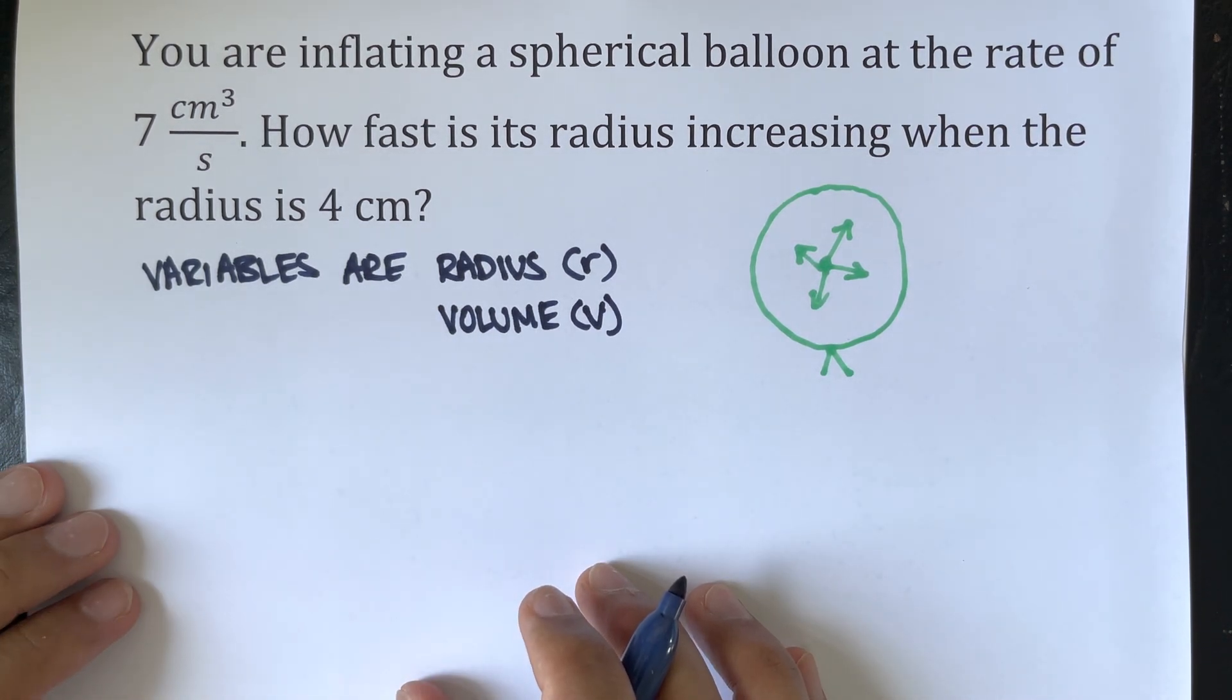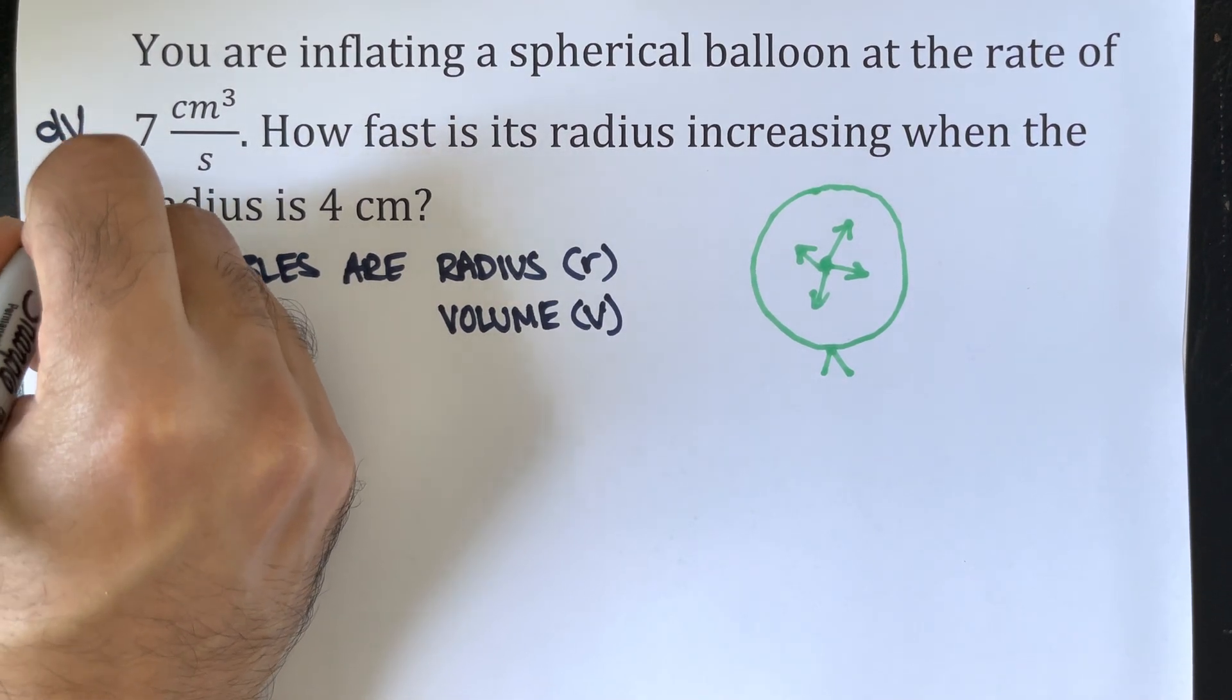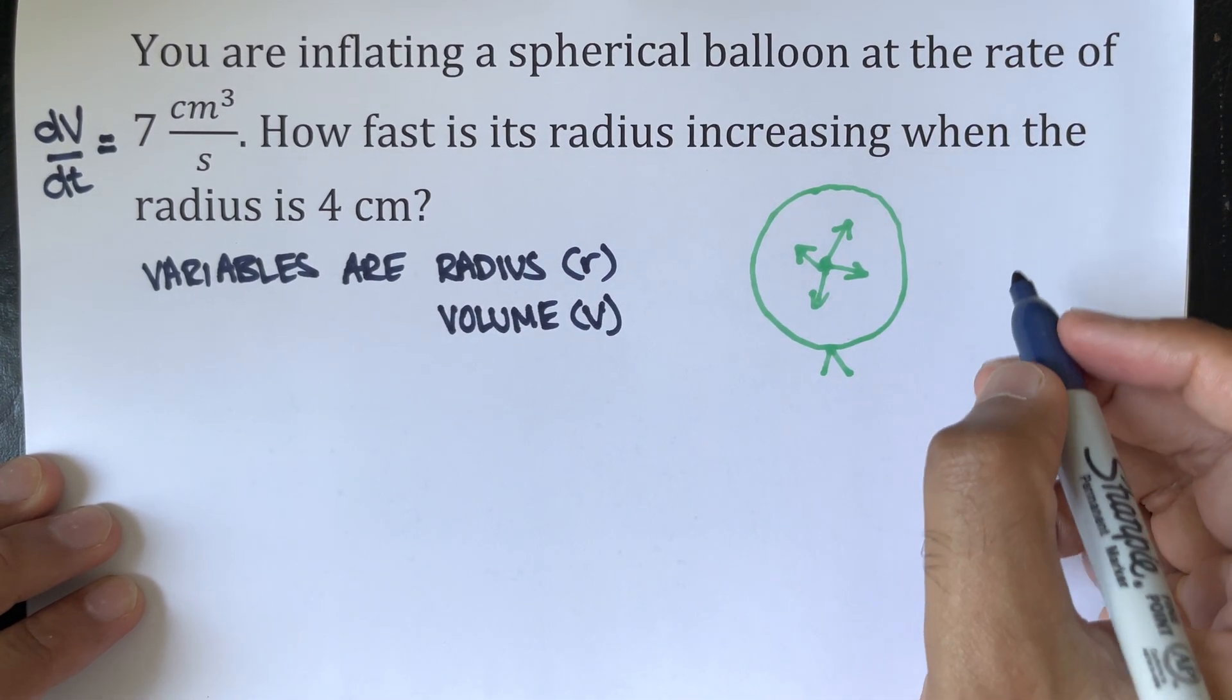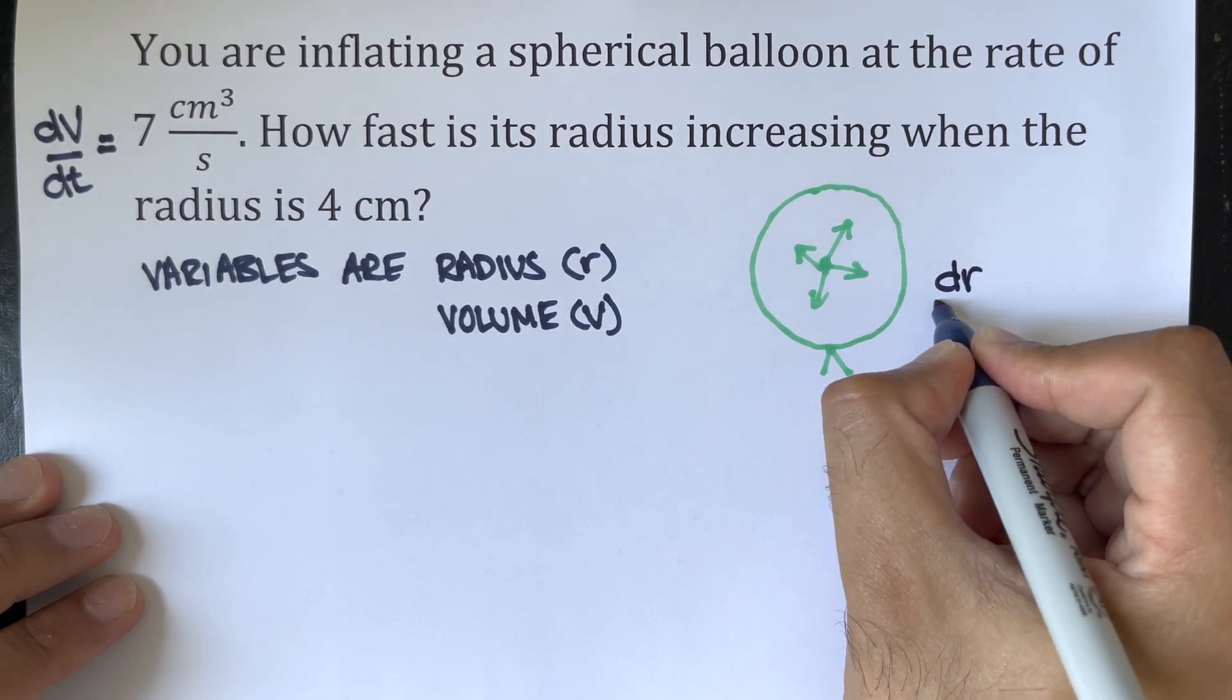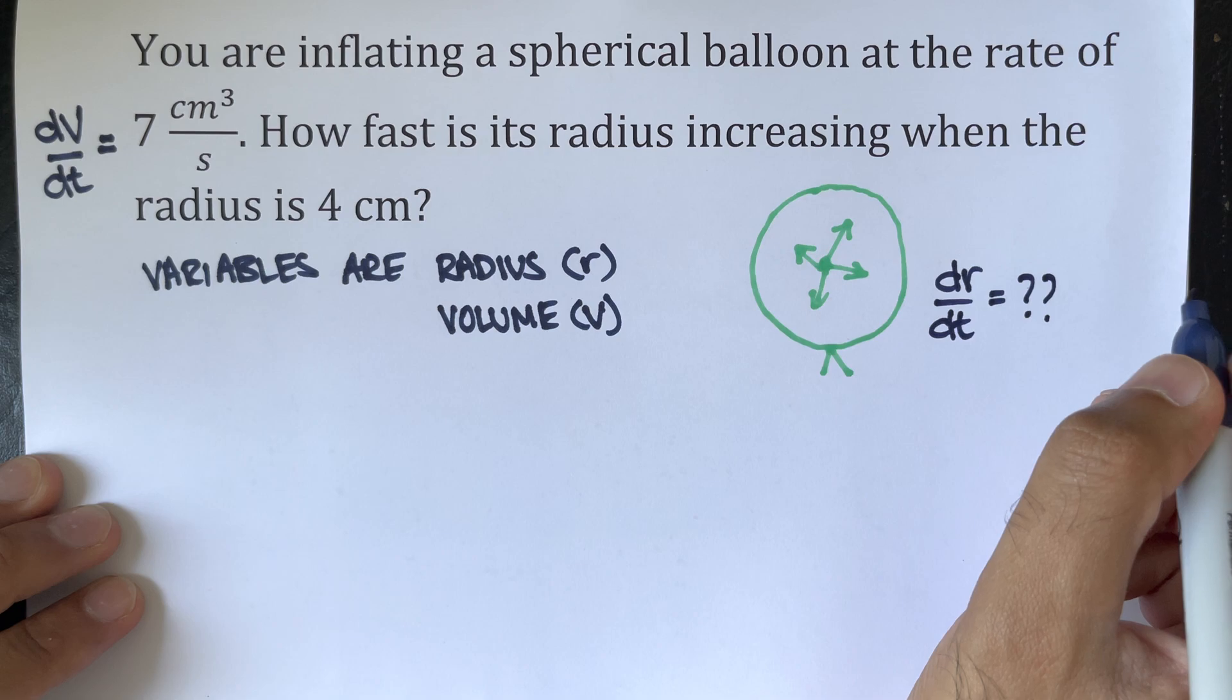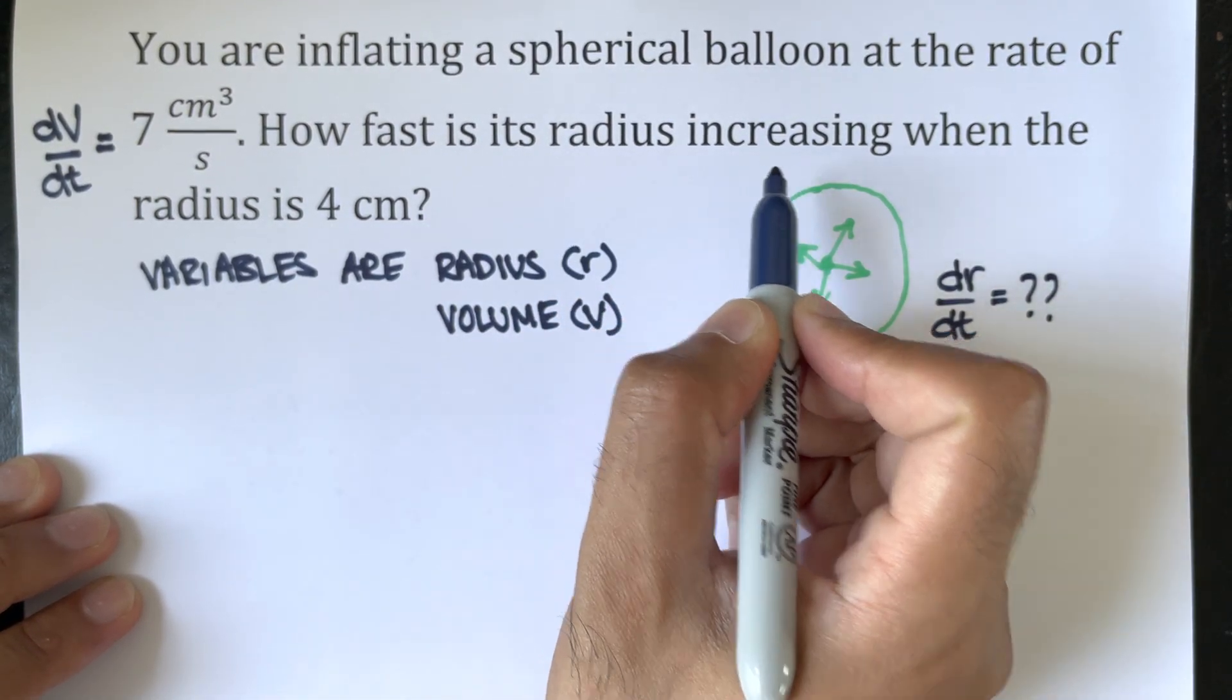We know dV/dt equals 7 cubic centimeters per second. We want to know dr/dt. That's the question: how fast is its radius increasing?